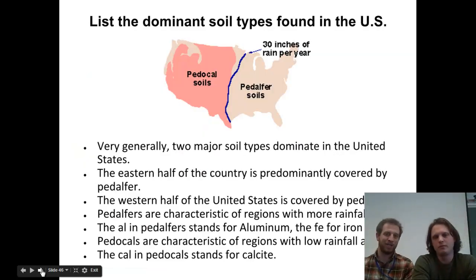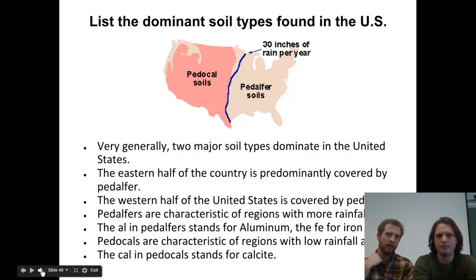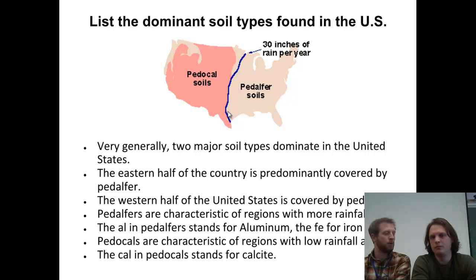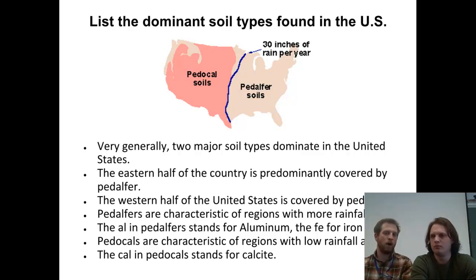So if we look at a really general way to classify soils — in America at least — there are two main types. In actuality there are like 30-some odd main types of soils, but these are the two big ones in America. There's that dividing line right down the middle of America. To the east we get more than 30 inches of rain per year, and to the west we get less than 30 inches of rain per year. Since there's so much more or less water present, we get very different soils on different sides of the country.